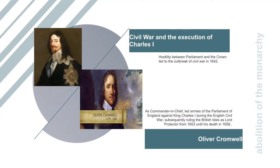Hostility between Parliament and the Crown led to the outbreak of civil war in 1642. Charles I succeeded his father, James I, in 1625 as king of England, Scotland, and Ireland, whose conflicts with Parliament led to civil war and his eventual execution in 1649. Charles I dissolved Parliament when faced with opposition, effectively ruling alone on a number of occasions. In his first four years of ruling, he dissolved Parliament three times, once for eleven years.